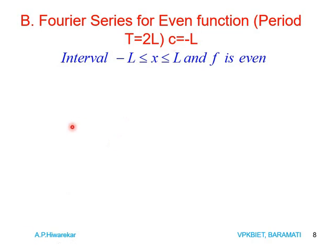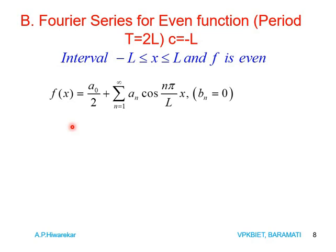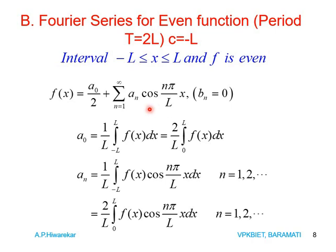If we set C = −L, we get the interval as −L to +L. For an even function — a function is said to be even if F(−x) = F(x) — the Fourier series is given by: F(x) = a₀/2 + Σ aₙ cos(nπx/L) where n varies from 1 to infinity. In this case bₙ = 0, and a₀ = (1/L) ∫ from −L to +L of F(x) dx, which by the property of definite integrals becomes (2/L) ∫ from 0 to L of F(x) dx.